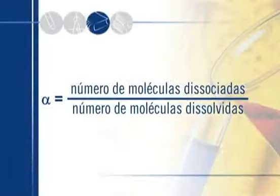Só que ela, ao se dissolver em água, ela se ioniza. Eu vou comparar quantas moléculas foram dissolvidas e delas quantas se dissociaram. Eu vou dividir o número de moléculas dissociadas pelo número de moléculas dissolvidas. A isso chamaremos de alfa, grau de ionização. Observe que esse alfa é sempre um número menor do que 1, porque nem todas as moléculas que foram dissolvidas se ionizam naturalmente.